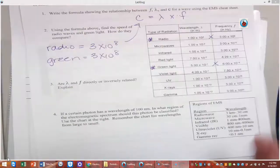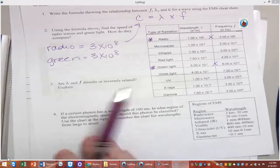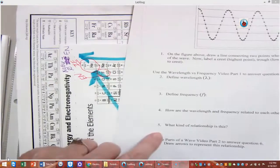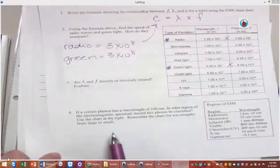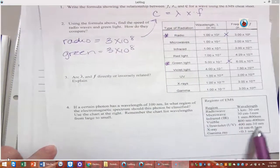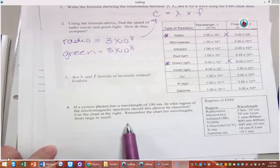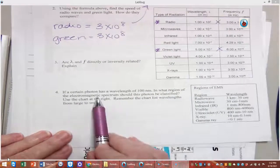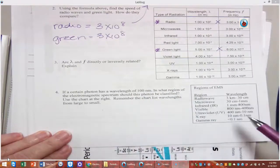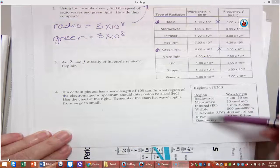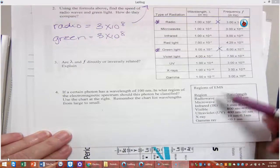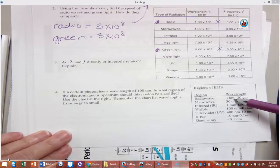So here we're going to answer this question. You've already answered this on this page over here. What kind of relationship is this? Here we're going to use these to answer this question. And it says, if a certain photon has a wavelength of 100 nanometers, which region of my electromagnetic spectrum would I find those?